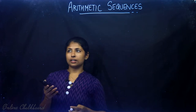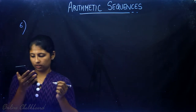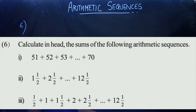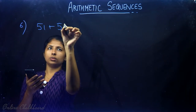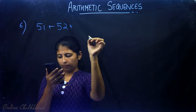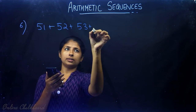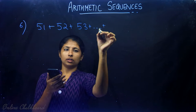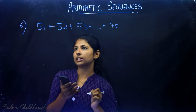Page number 35, question number 6: Calculate in your head the sums of the following arithmetic sequence — 51 plus 52 plus 53 and so on up to 70. This is the sum we need to calculate.